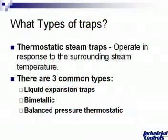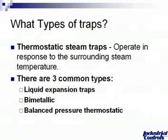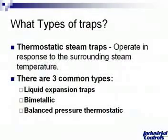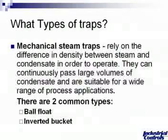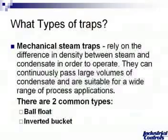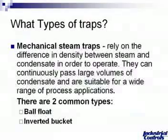There are several different styles of steam traps. One style is a thermostatic steam trap — they operate in response to surrounding steam temperature. In the thermostatic family there are three different kinds: a liquid expansion trap, a bimetallic style, and a balanced pressure thermostatic. In the mechanical steam trap family, mechanical steam traps rely on the difference in density between steam and condensate in order to operate. They can continuously pass large volumes of condensate and are suitable for a wide range of process applications. There are two common types: a ball float and an inverted bucket.